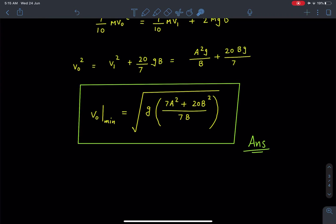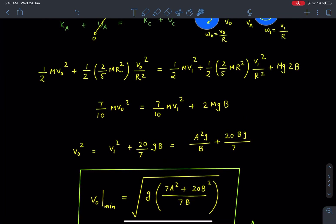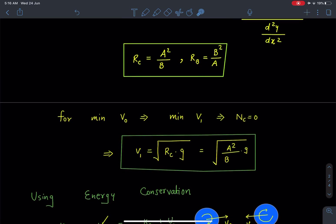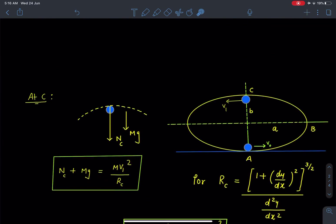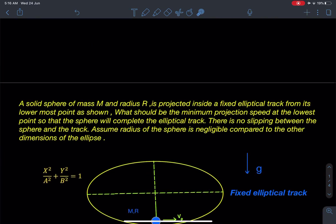This V₀ minimum, which is the minimum velocity at lowermost point, and that value is √[g(7a² + 20b²)/(7b)] is going to be the answer for this problem. I hope you have enjoyed this problem.